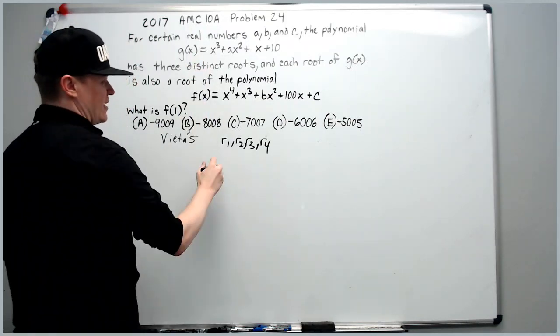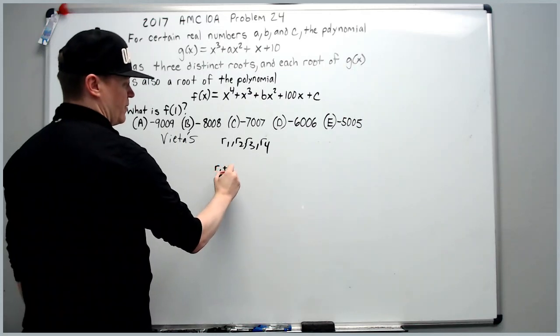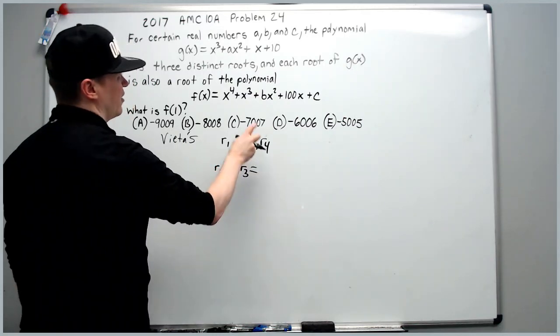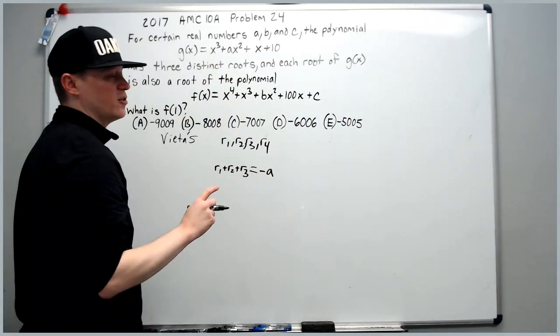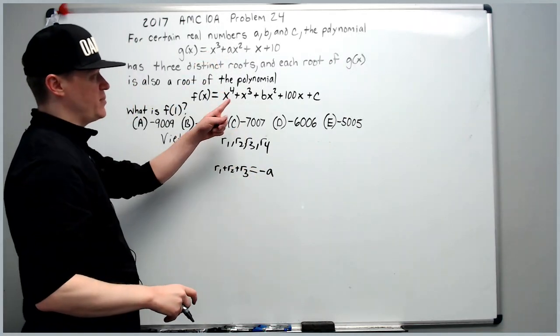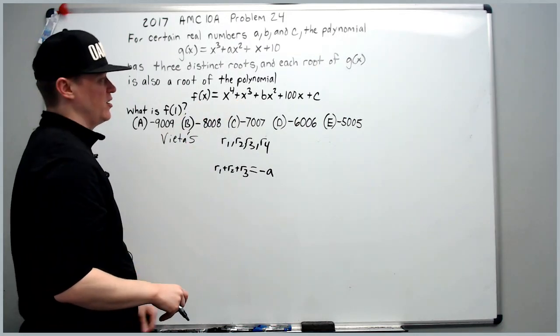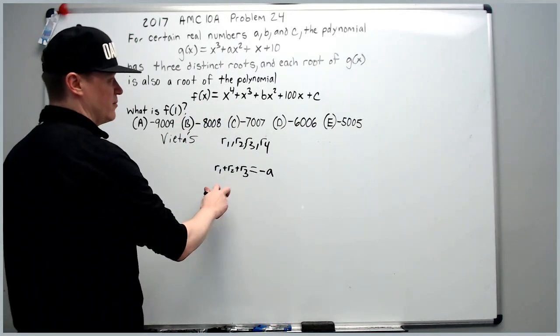For cubics, the sum of the roots r1 plus r2 plus r3 is the negative second coefficient over the first. That is true for all polynomials. It will always be the negative second coefficient over the first for the sum of the roots.